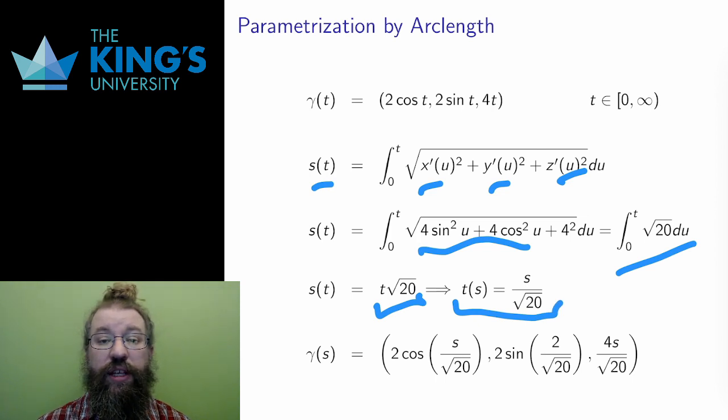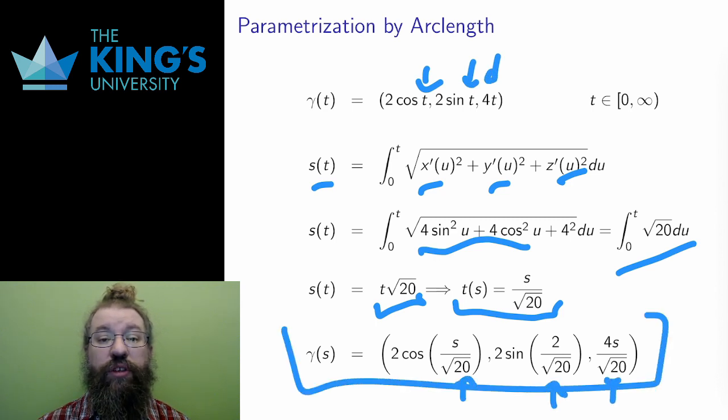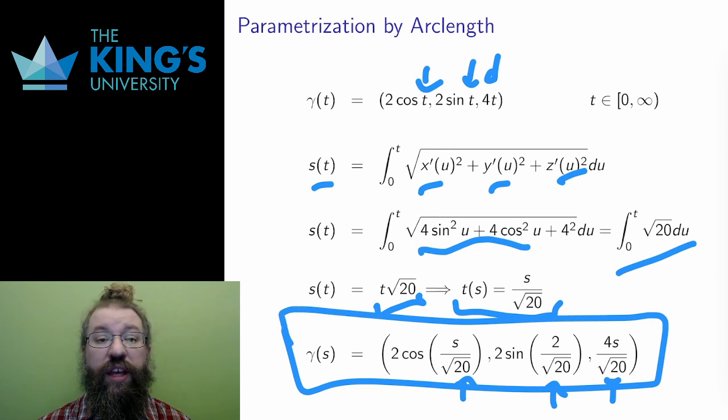Then I replace this t in the function. The resulting parametrization in the S parameter is precisely the parametrization where S equals 4, say, is 4 units of distance along the helix, and S equals 10 is 10 units of distance along the helix, and so on.